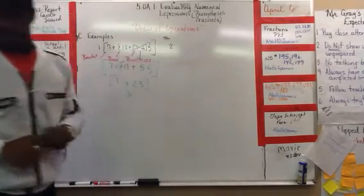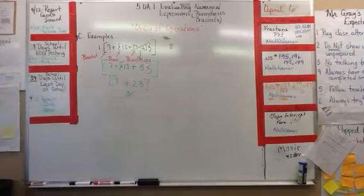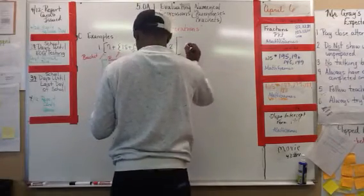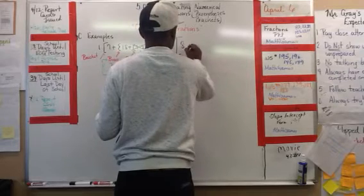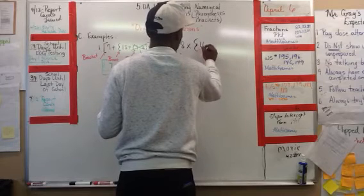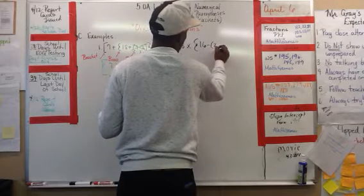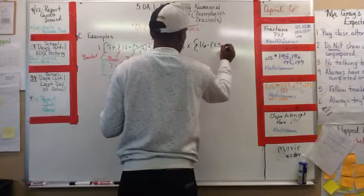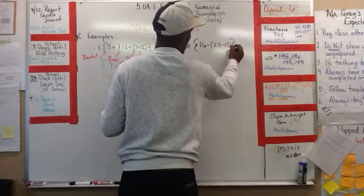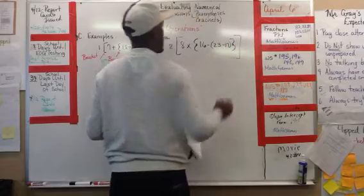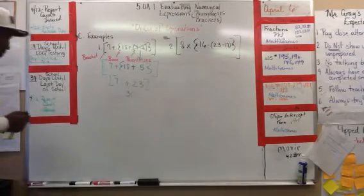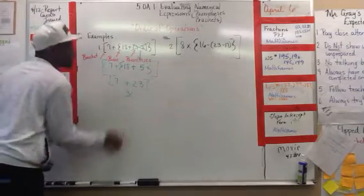And these are coming straight from the worksheet booklet that I would normally give you. This is a good one. Papa bear bracket. Eight times. Mama bear brace. Sixteen minus baby bear. Close the baby bear. Close mama bear. Daddy bear covers us on. Where am I going to start? Baby bear. Parentheses.